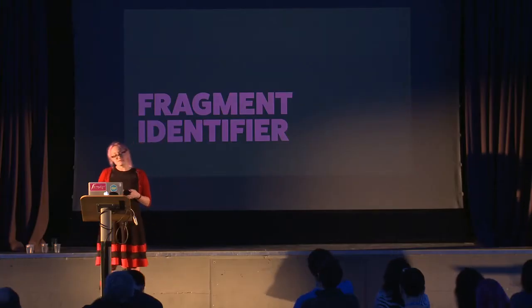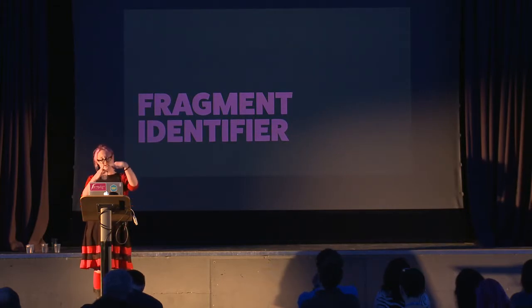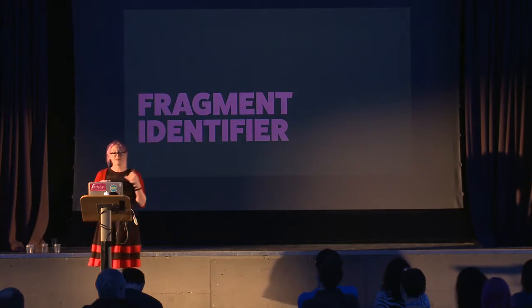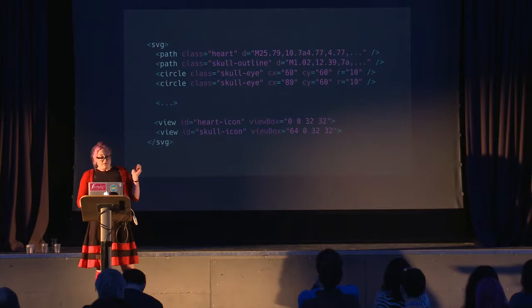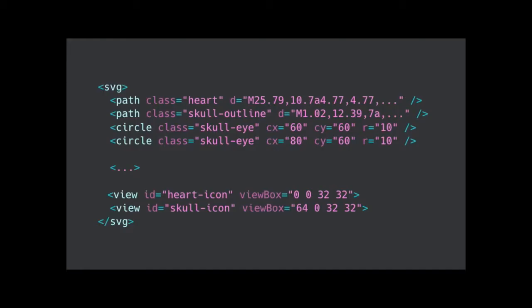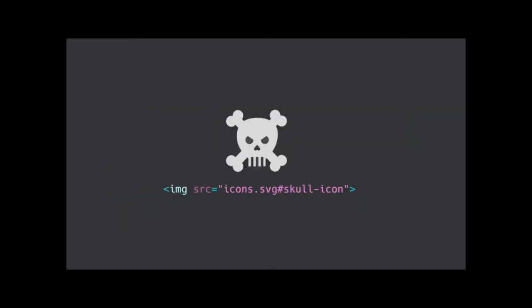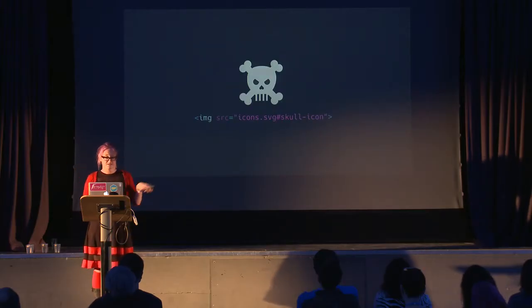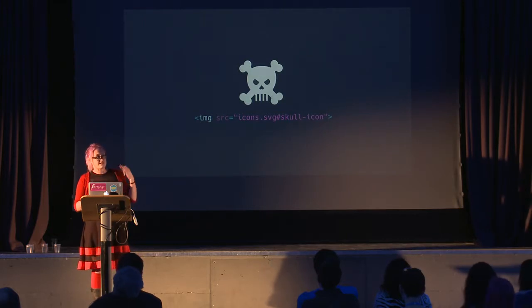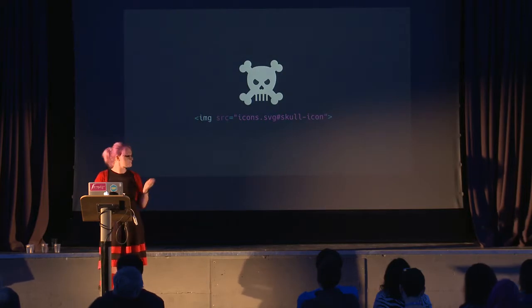The fragment identifier method uses SVG fragment identifiers and views to show a window on a particular icon — again, very similar to the CSS sprite method. You have a big SVG holding all your icons, and you use the native viewBox method to crop to a particular icon based on the SVG coordinate system. Each view is a window showing a particular icon, referenced via a fragment identifier. On the front end, you'd just use an image tag. This is pretty good because it's a bit more visual — you can open that SVG in Illustrator and see all the icons. But I find the SVG elements less accessible via CSS, so I prefer the symbol method.